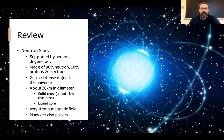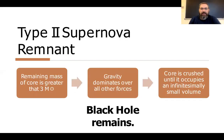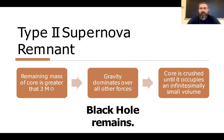Many neutron stars are also pulsars. The other way type 2 supernovas can produce remnants is as a black hole. Neutron stars typically have masses between 1.1 and 2.1 solar masses, while black holes are remnants with about three solar masses or greater. To understand how we can observe black holes, you need to understand the special topic of general relativity.